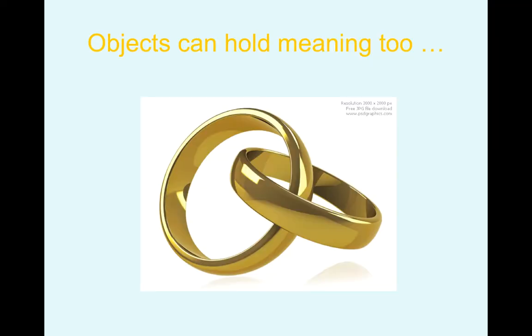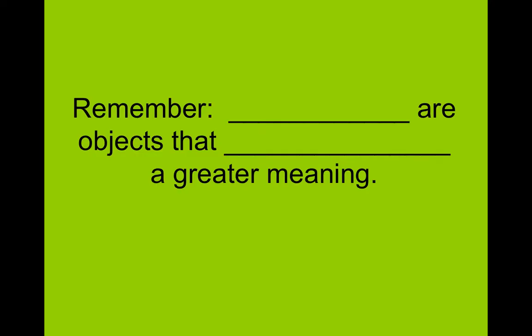Wedding rings — when I got married, the minister went through a big speech about how the wedding rings are a circle, and they go on and on forever, just like love should go on and on forever. Wedding rings themselves are a symbol of love. Remember, symbols are objects that have a greater meaning.